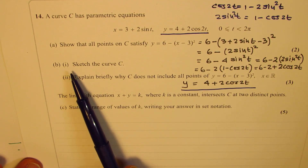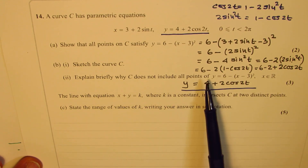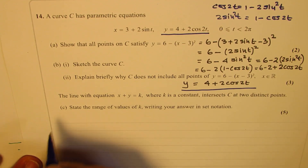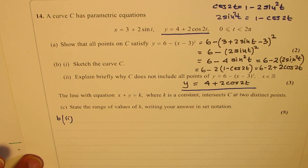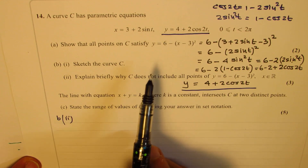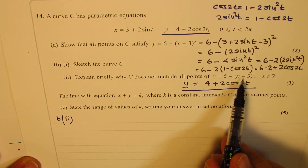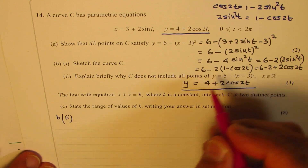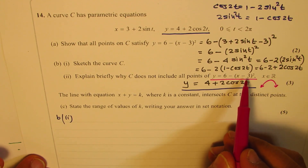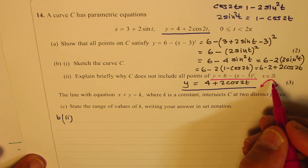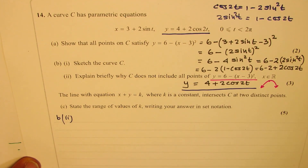For part B, we sketch the curve C and explain why C does not include all the points of this curve where x belongs to real numbers. The equation y equals 6 minus (x minus 3) squared is a parabola which opens downwards with a vertex at (3, 6), where x belongs to all real numbers. However, we have a restriction on x and y here.